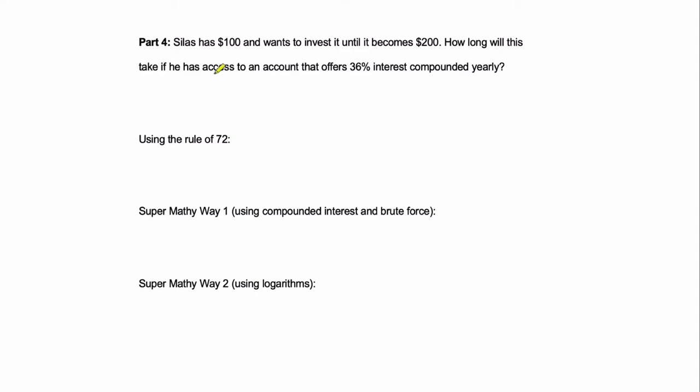Hello, welcome. We are going to finish this introductory packet to the Rule of 72 with Part 4 here. And we're told that Silas has $100 and wants to invest it until it becomes $200. How long will this take if he has access to an account that offers 36% interest compounded yearly?